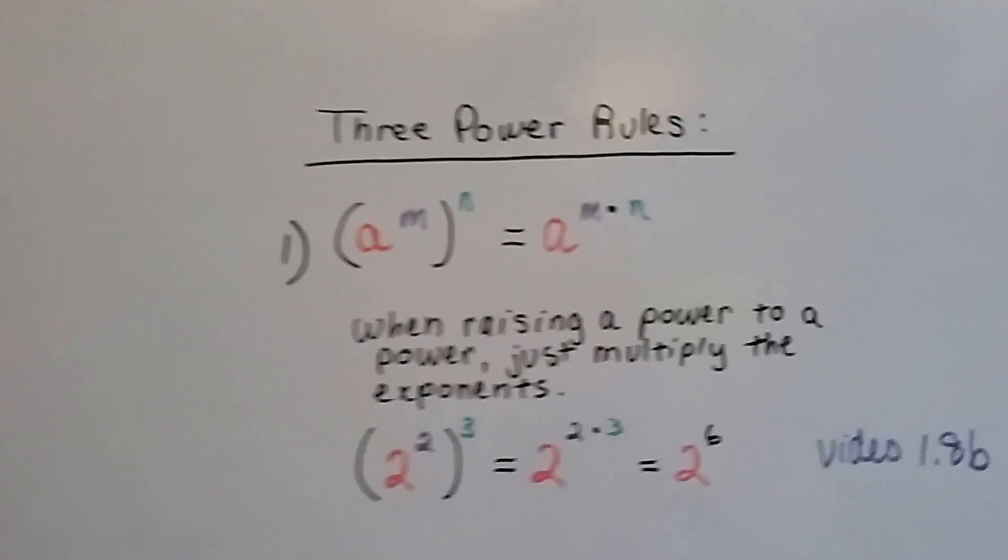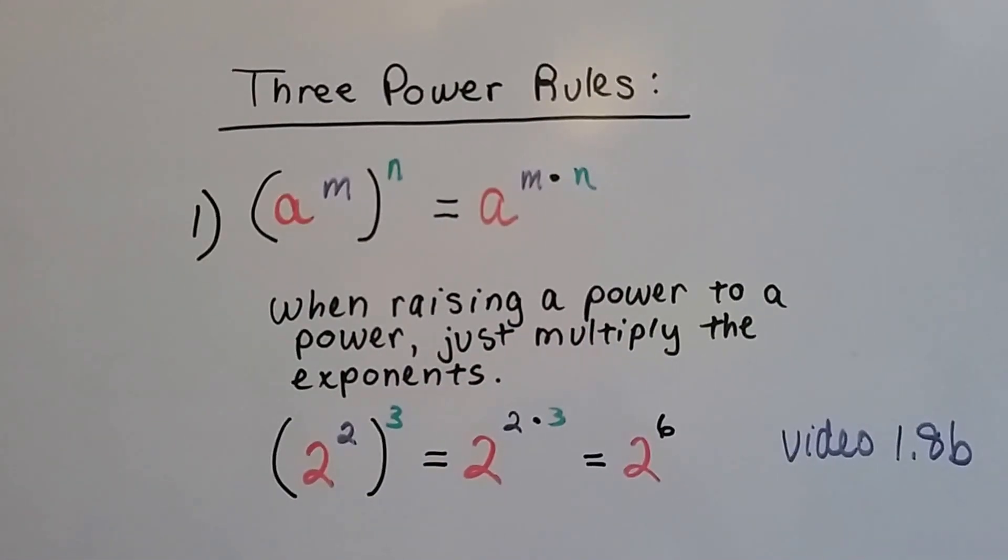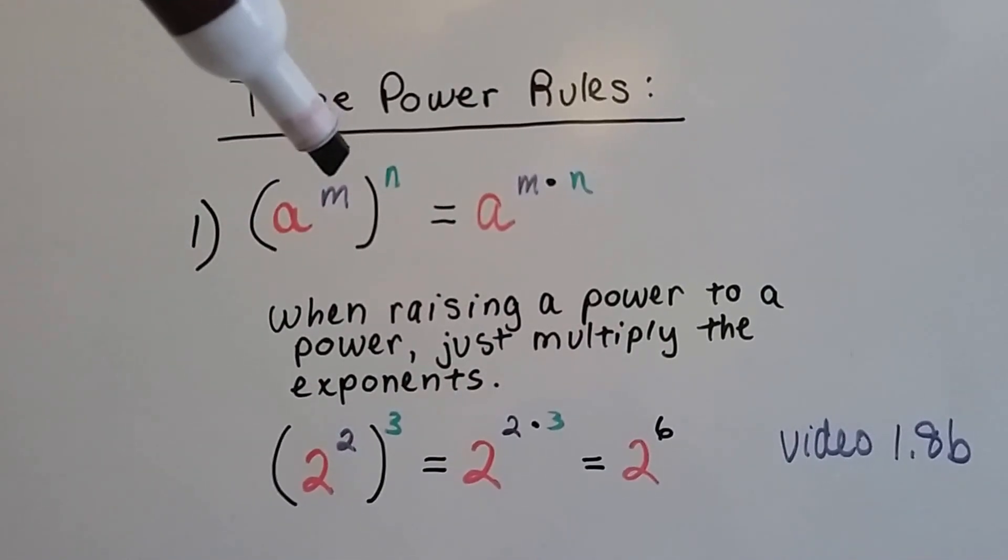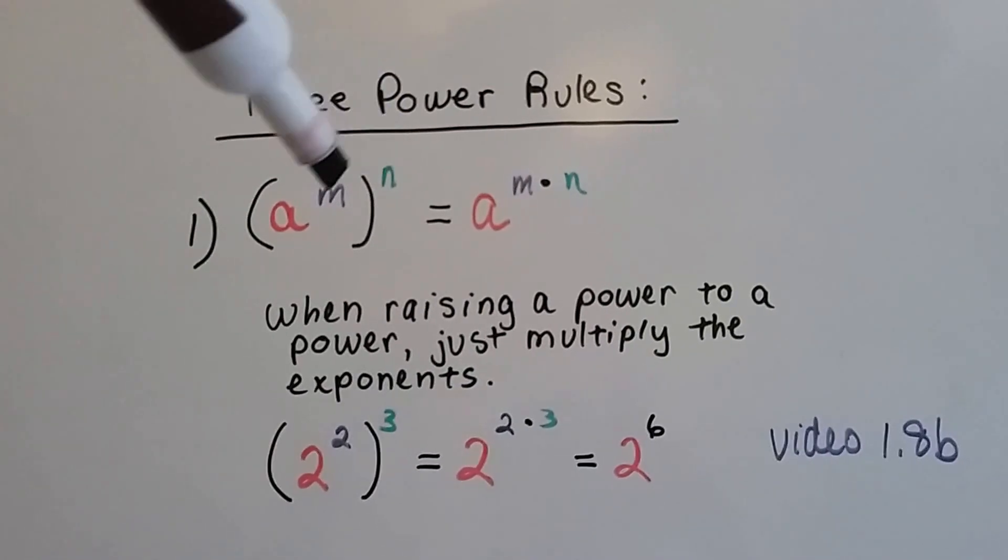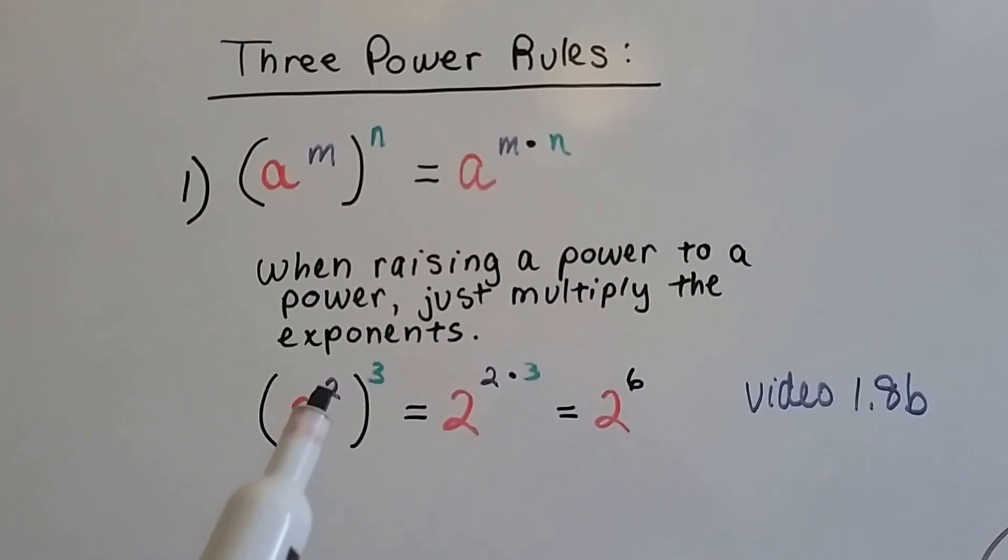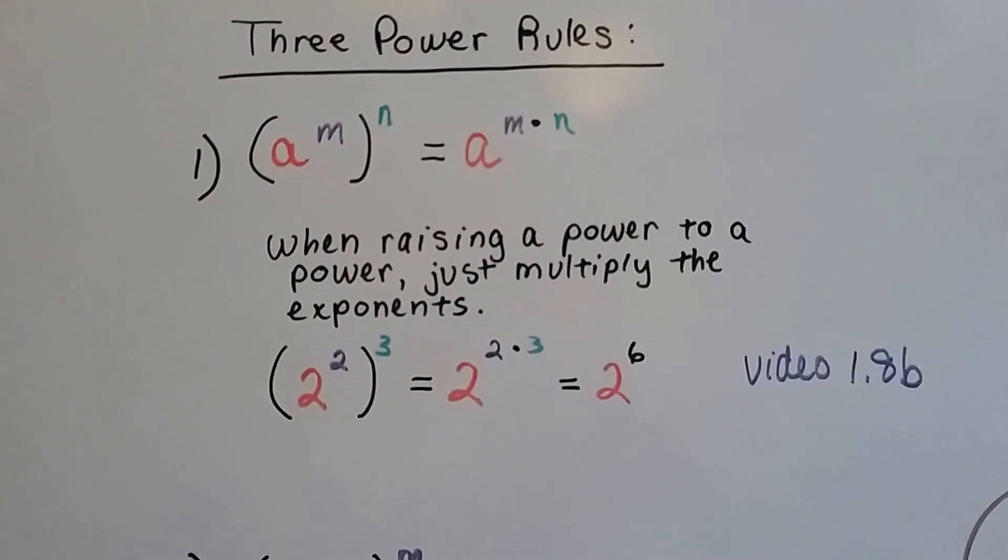Then there's the three power rules. The first one says when raising a power to a power, we just multiply the exponents. So if we've got a number inside of the parentheses and it's got an exponent and there's an exponent on the outside of the parentheses, we just multiply these two exponents together. This would be 2 to the 2 times 3. It would be 2 to the sixth power. That was in video 1.8b.